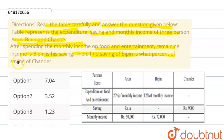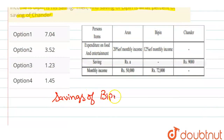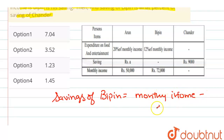Savings of Wipen is what percent of savings of Chandra? इसको कैसे solve करेंगे? सबसे पहले, यह हमारी savings of Wipen है, यह किसके equal है? यह equal है हमारी monthly income, जो उसकी monthly income होगी, minus expenditure के equal, जो उसका expenditure होगा.